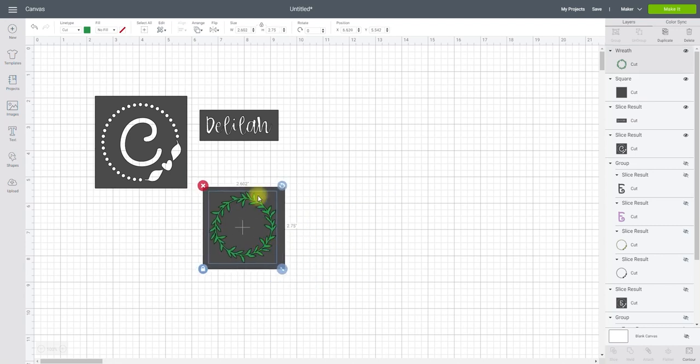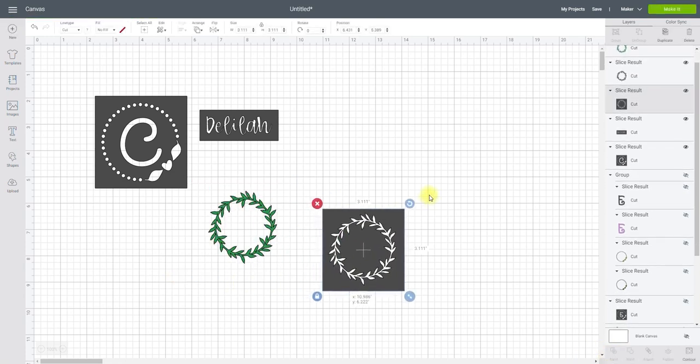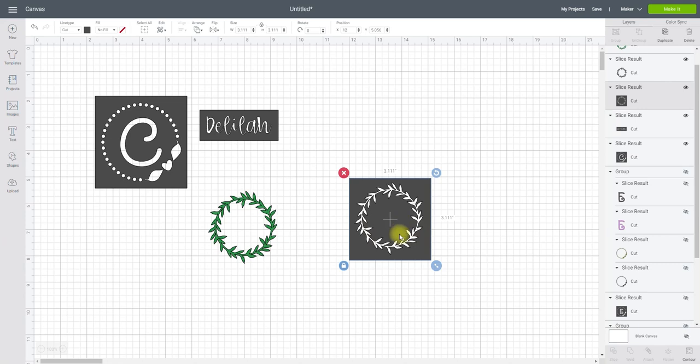So I want to make sure that I've got a nice buffer all the way around and once I'm happy I can simply select them and then go to slice and this will then be my stencil.